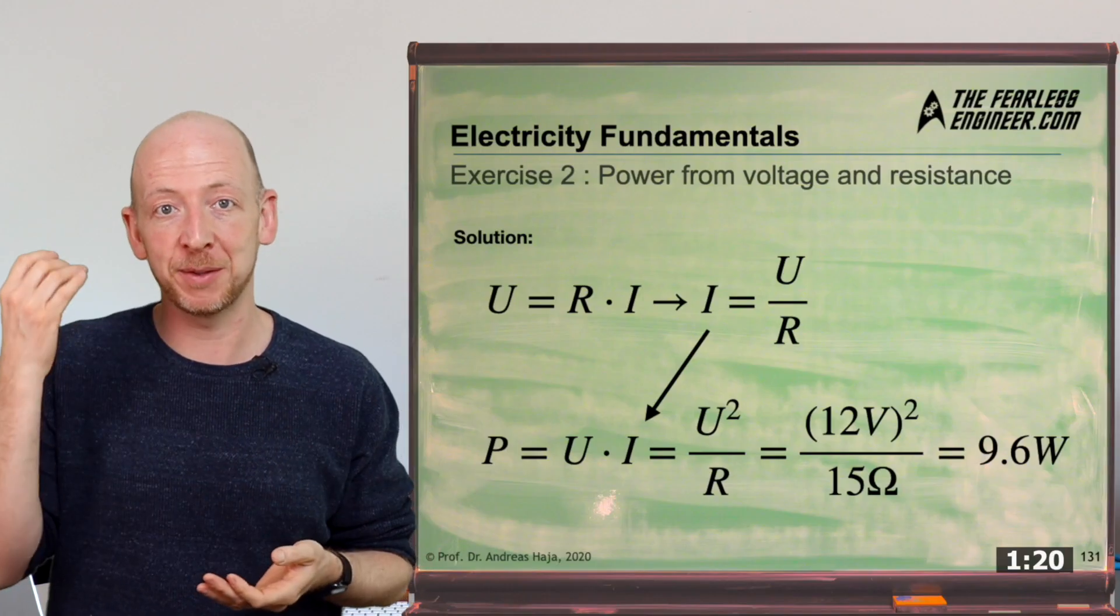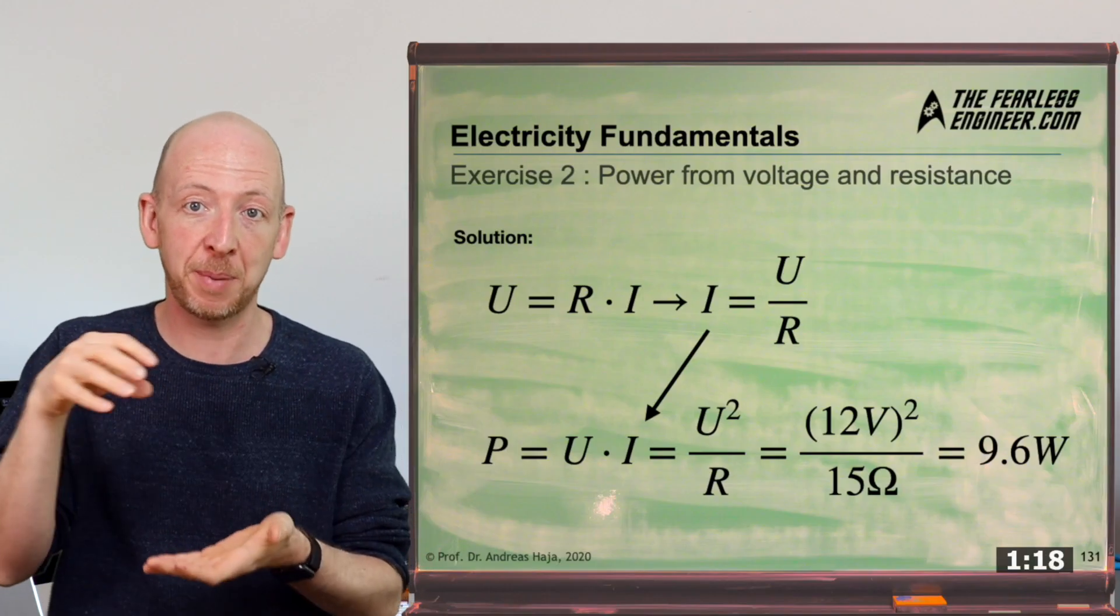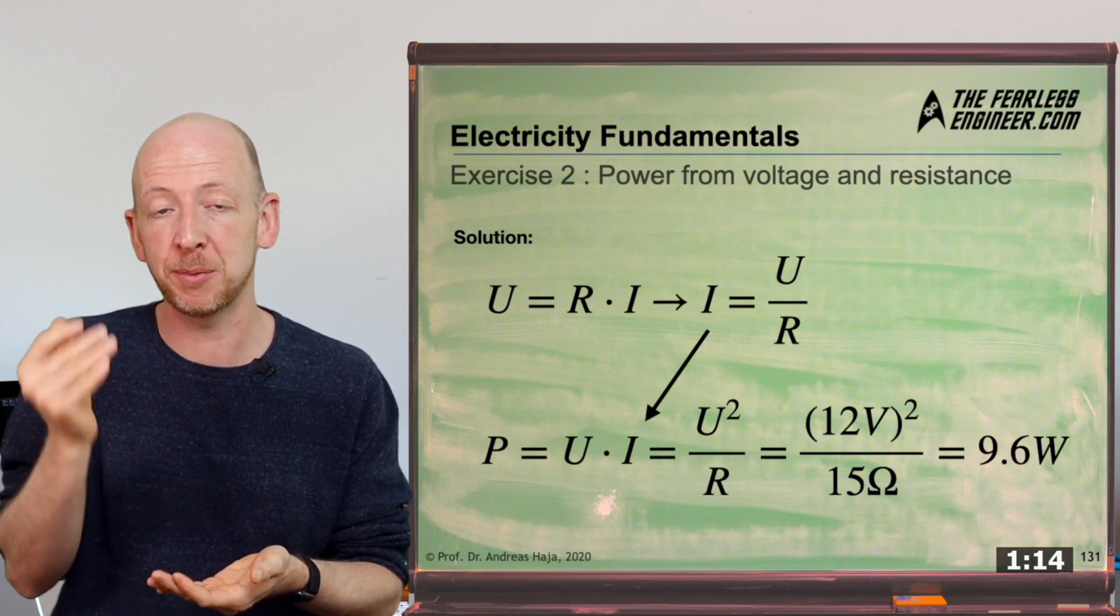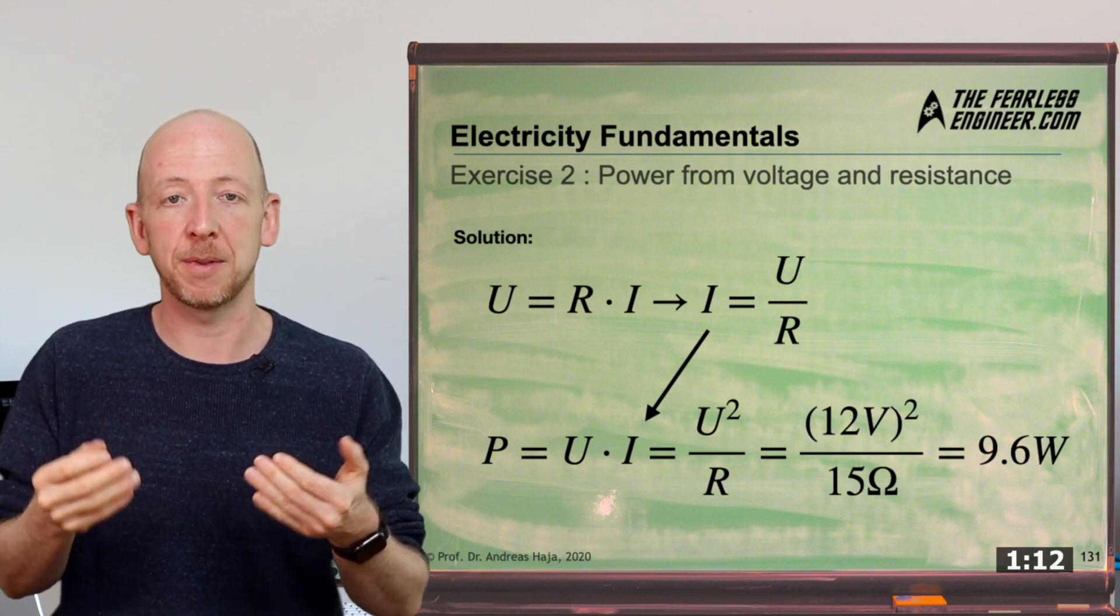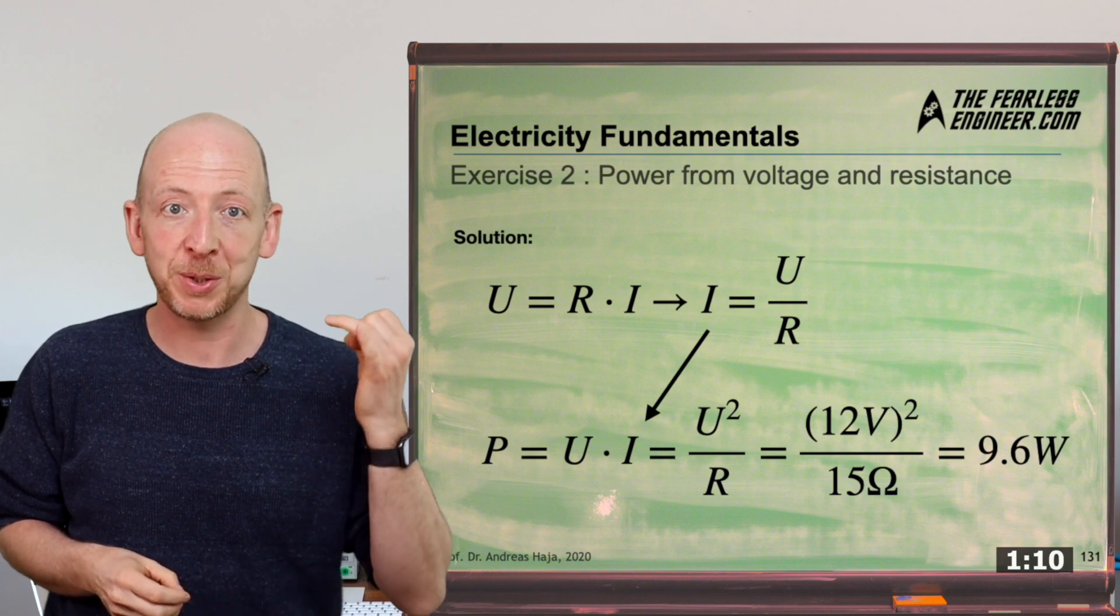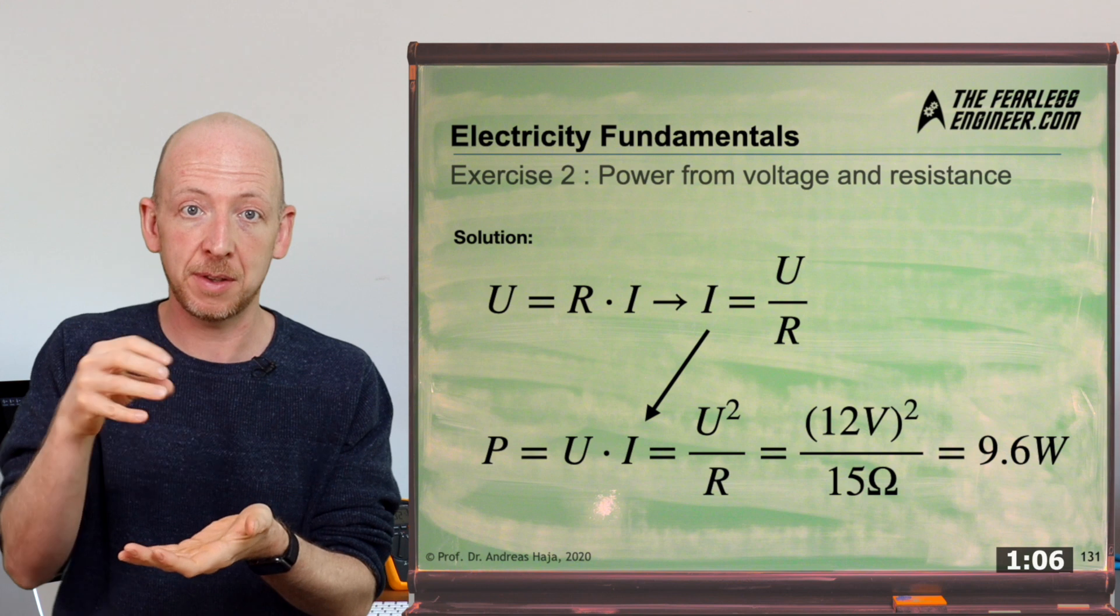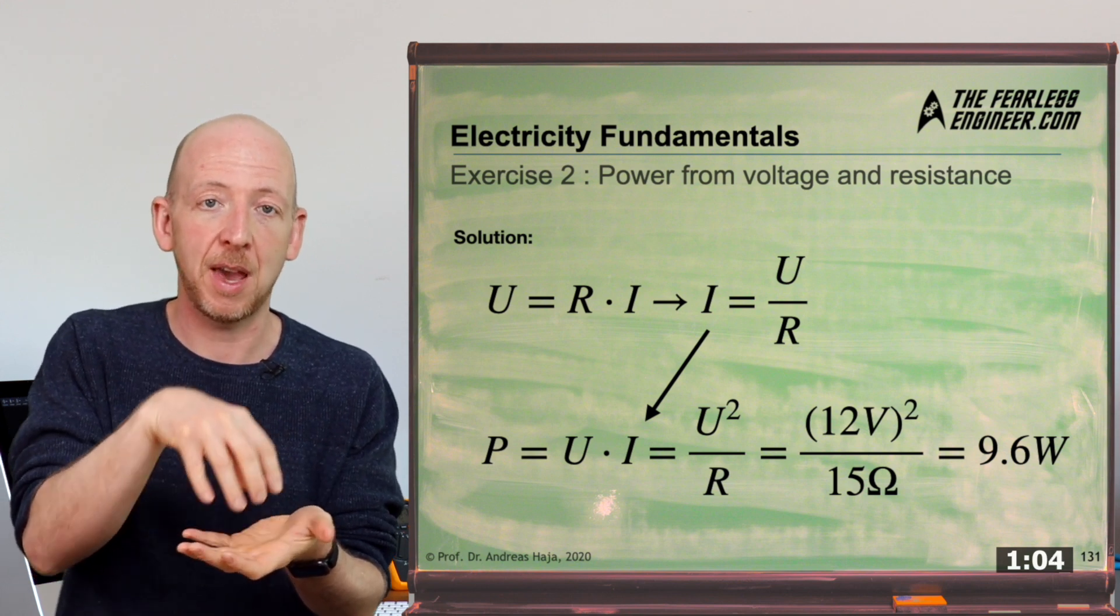Here comes the solution. As you have certainly noticed, we can't get anywhere with the power law alone because we don't know the current. So in order to solve the problem we also need something else. In the last video I showed you how to combine the power law and Ohm's law, and we now need the version that contains power, voltage and resistance.